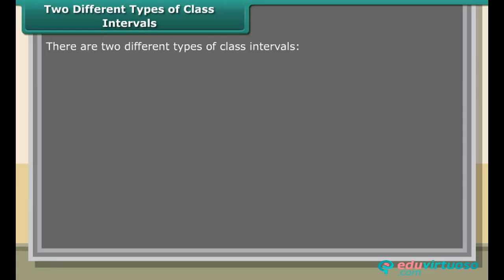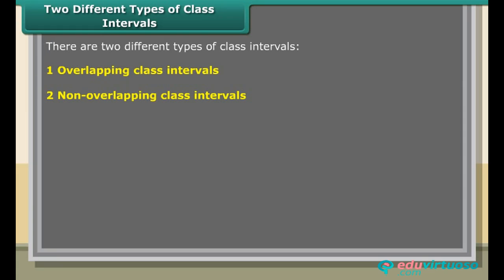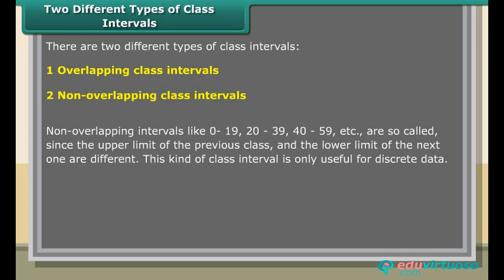There are two different types of class intervals: overlapping and non-overlapping class intervals. Non-overlapping intervals like 0–19, 20–39, 40–59, etc. are so called since the upper limit of the previous class and the lower limit of the next one are different. This kind of class interval is only useful for discrete data.